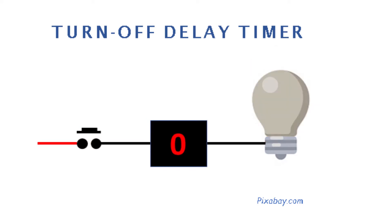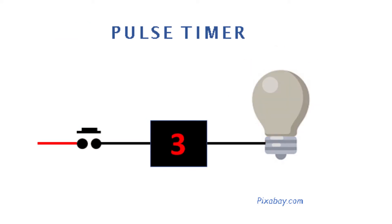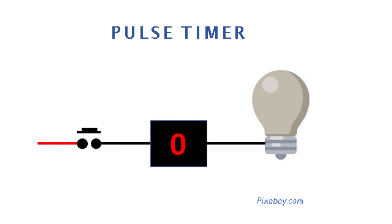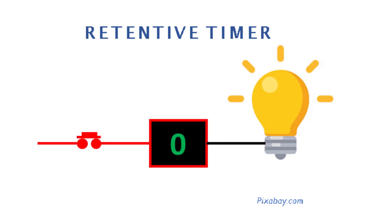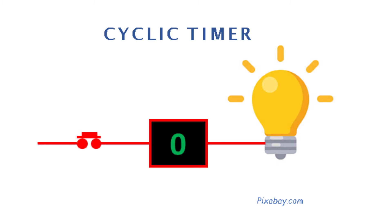Pulse timers, which are timer high and timer low; retentive timer and retentive timer low; and finally, cyclic timer.